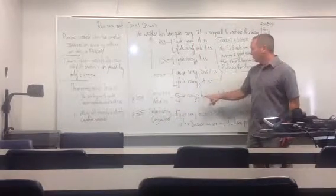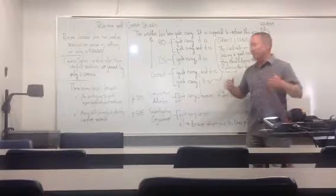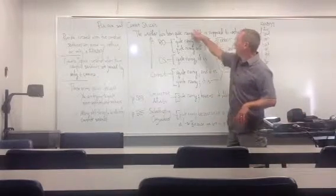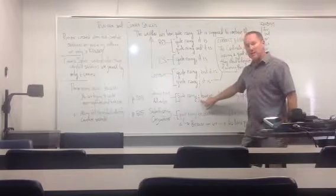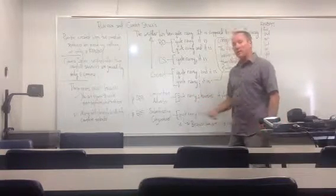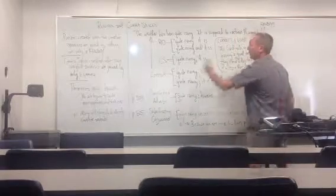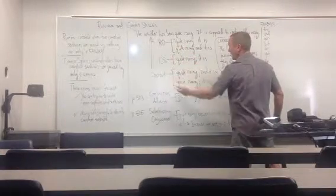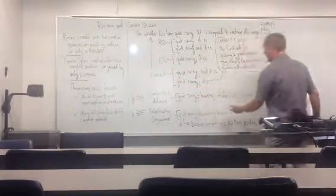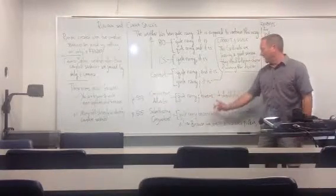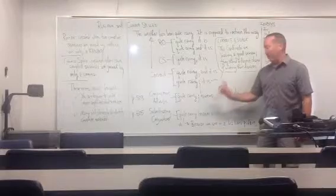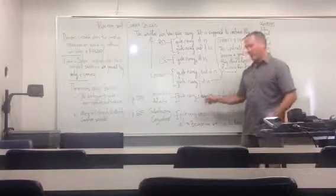Whenever you use a word like however between two complete sentences, it always needs to be preceded by a semicolon, not a comma. If you just put a comma there, it's a comma splice. So, if the sentence said, the weather has been quite rainy, however, it should dry up soon, you put a semicolon before it and a comma after it. Okay. That's when that conjunctive adverb is being used to join two sentences together.